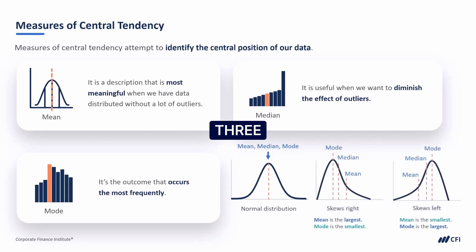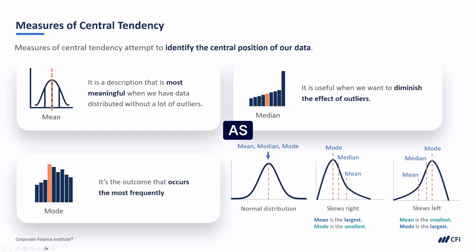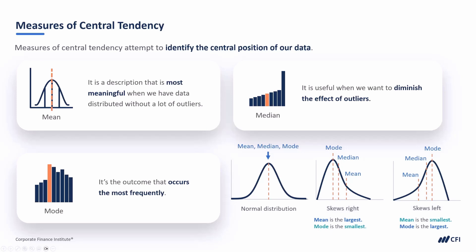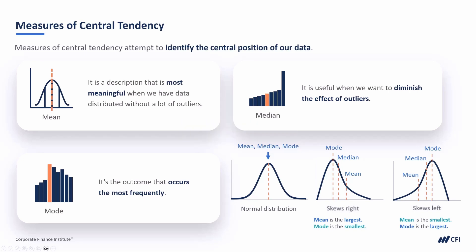One of the ways in which these three measures are different is in how sensitive they are to outliers or skewing. As our data skews left or right, the mean moves with that skewing. The median moves as well, but to less of a degree. And our mode remains right at the peak. Taken together, they can be helpful for understanding the skew of our distribution.